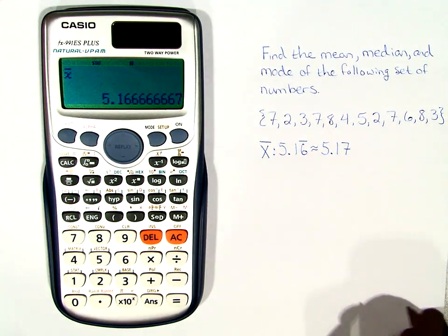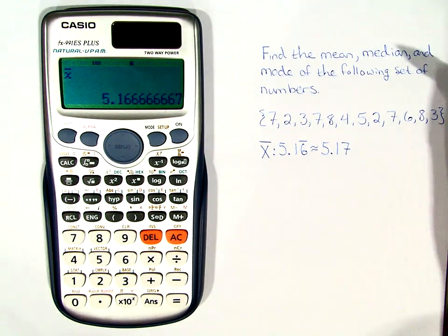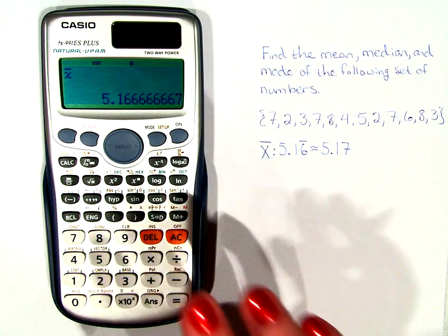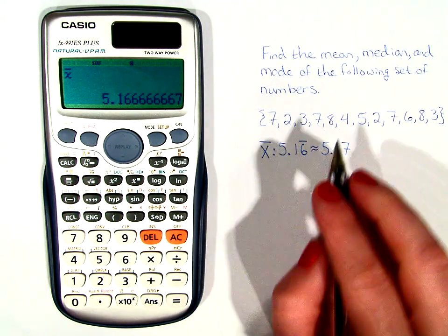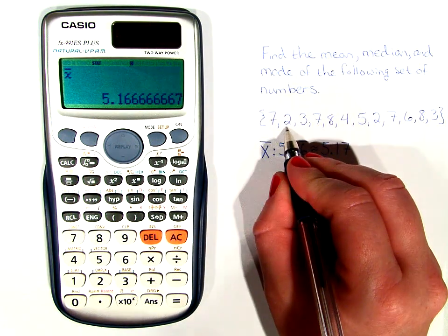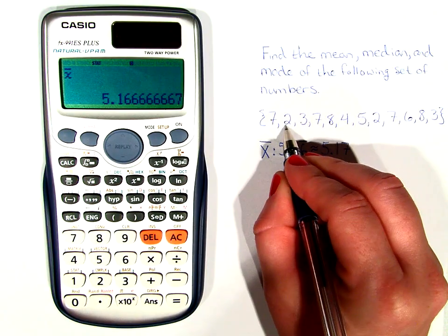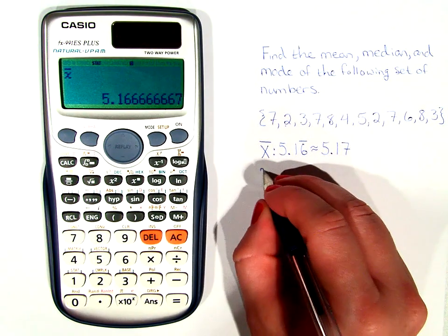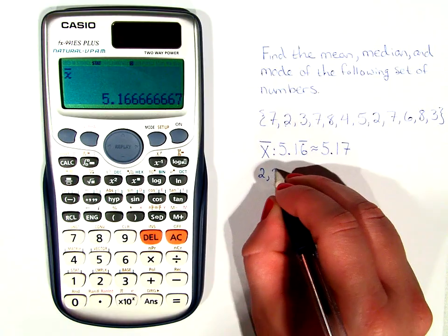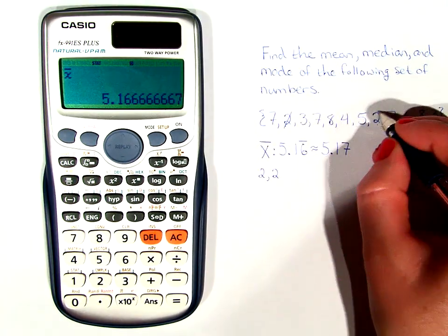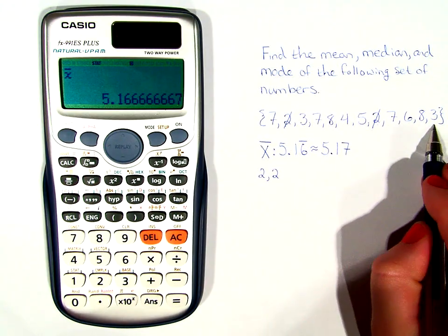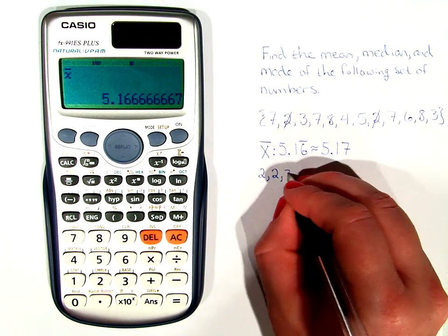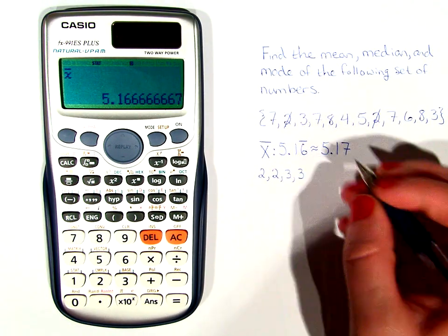Now in order to figure out the median and the mode, we don't use the calculator. All we do is list out the numbers from least to greatest. So we'll start with the smallest numbers, which are 2. There are two 2's. So 2, 2. We'll mark these out. The next are 3's. There are three 3's. We mark them out.